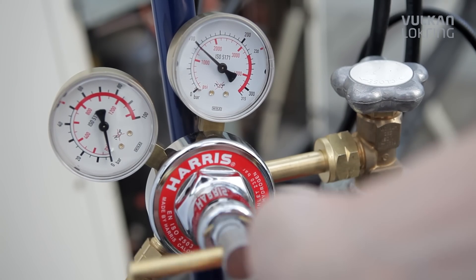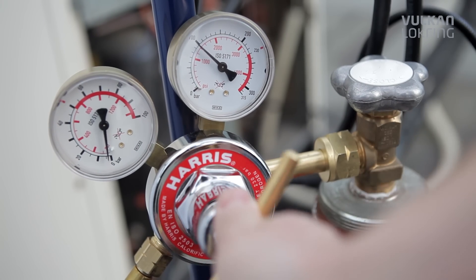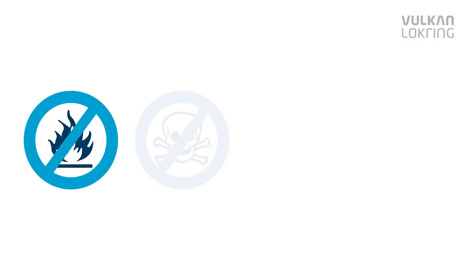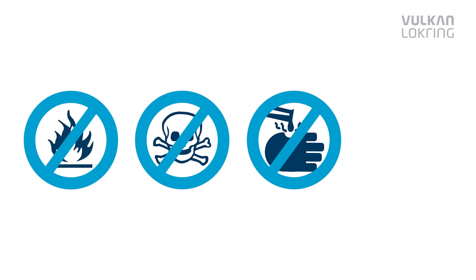Forming Gas 95.5 comprises 95% nitrogen and 5% hydrogen. The gas is non-flammable, non-toxic, non-corrosive and not harmful to the environment.